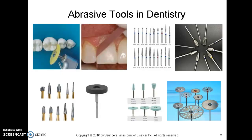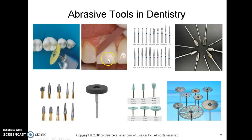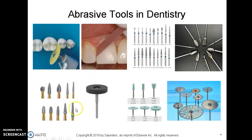Here are examples of all those tools. We have a sandpaper disc going between the interproximal contacts to smooth, shape, and contour those contacts. We have a sandpaper strip used for gross finishing and fine polishing of the interproximal. Here are some different shapes and sizes of diamond burs, and some acrylic burs used to trim dentures and retainers.